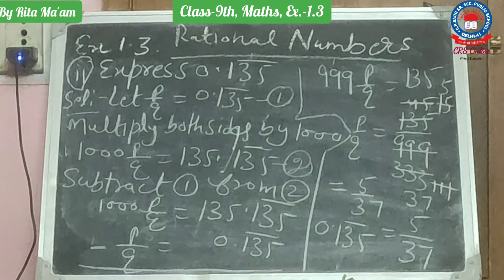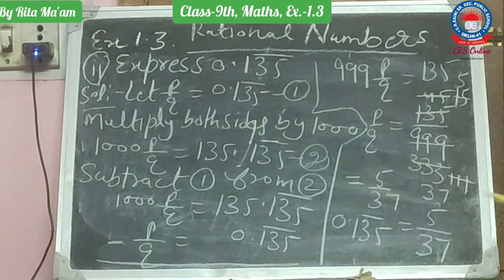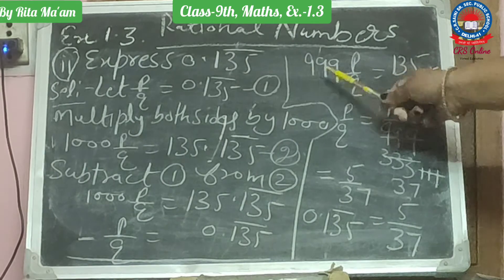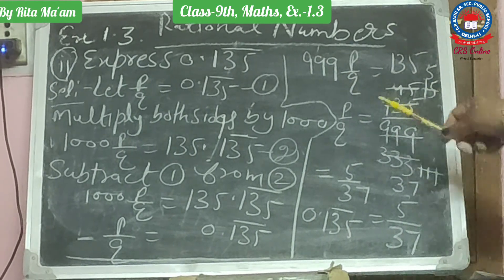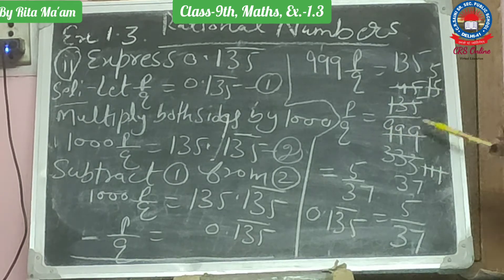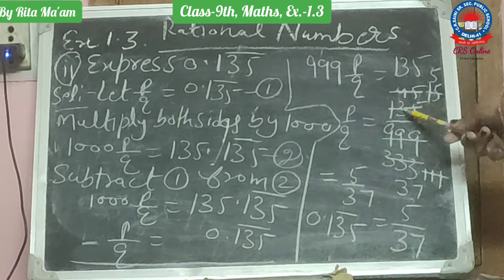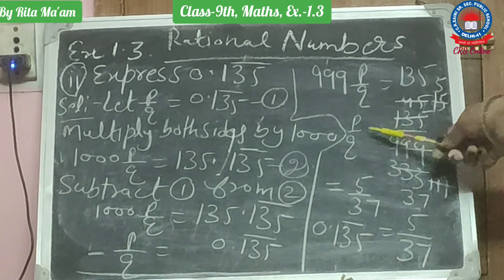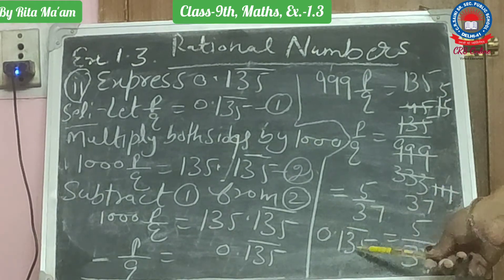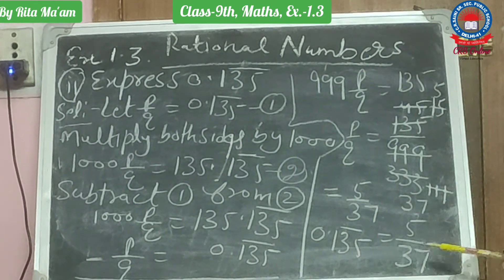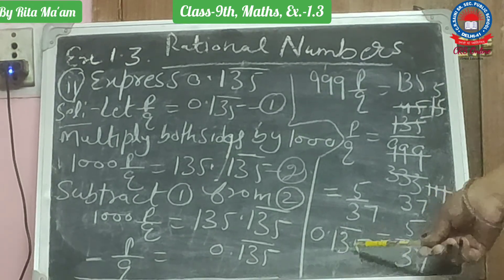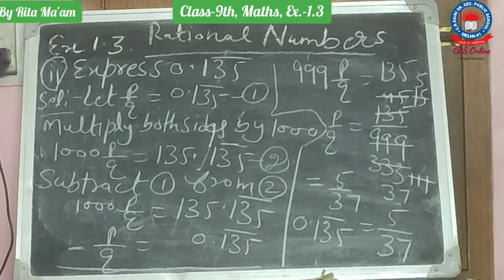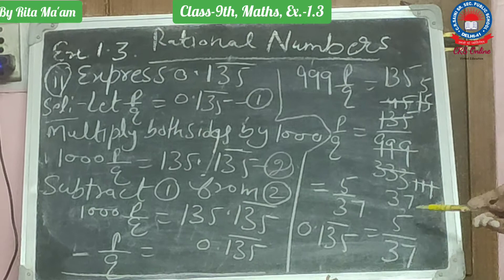Similarly, we will subtract equation 1 from equation 2. You will get 999 P upon Q equal to 135. So P upon Q equals 135 upon 999. Now we simplify by dividing and get 5 upon 37. Therefore 0.135 bar equals 5 upon 37. This is the P upon Q form, the rational representation of this number. This way we can represent 1-digit, 2-digit, and 3-digit repeating numbers as rational numbers.